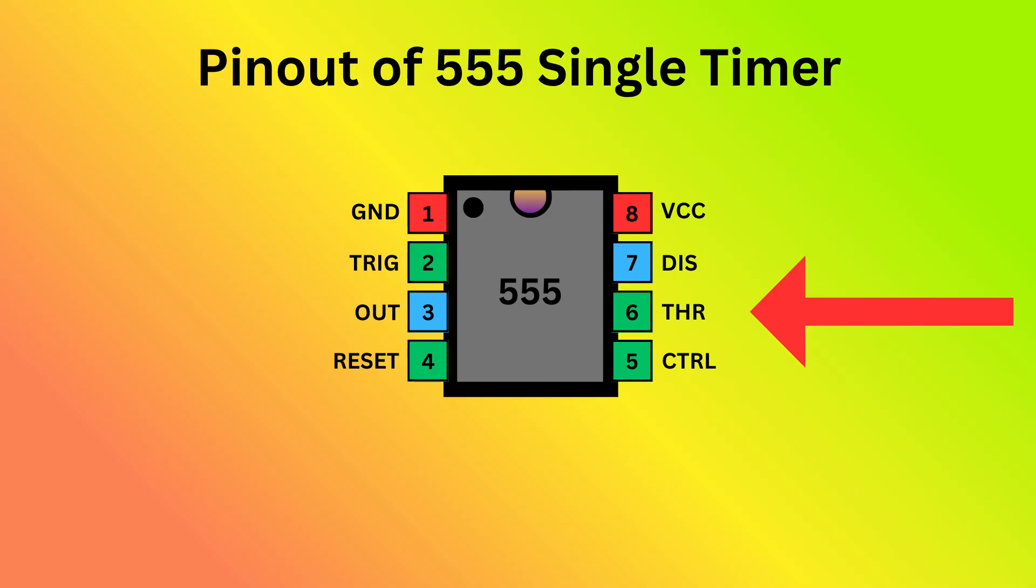Pin 6 is threshold. It monitors the voltage of the capacitor connected to the circuit. Pin 7 is discharge. It controls the charge and discharge cycle of the timing capacitor. Pin 8 is VCC. It is responsible for supplying the power to the IC.